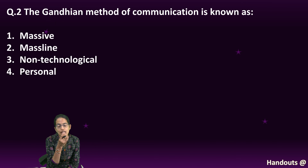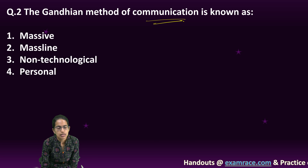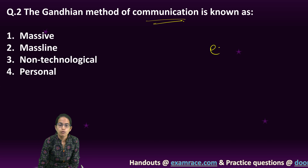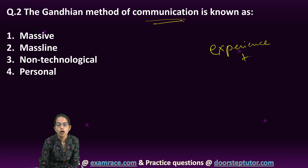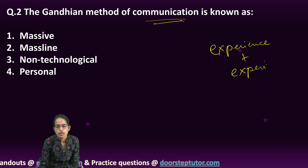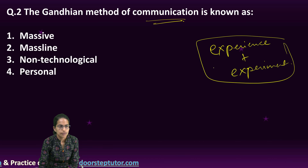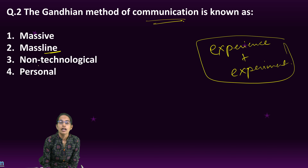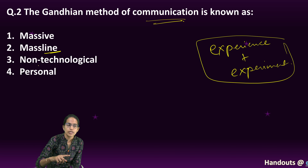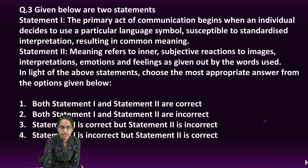The next question — a very important one — is about the Gandhian model of communication. The Gandhian model focuses on two things: experience along with experimentation, where experience and experiment should go hand in hand. It focuses both on verbal as well as non-verbal communication and is therefore known as a mass line communication.